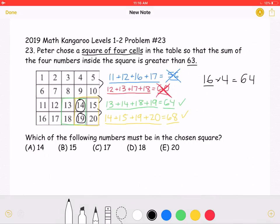However, 19 is not an answer choice. So, the answer must be 14, which is answer choice A.